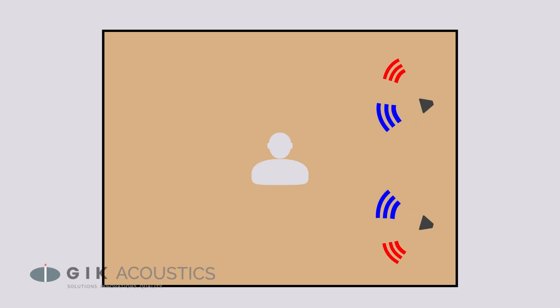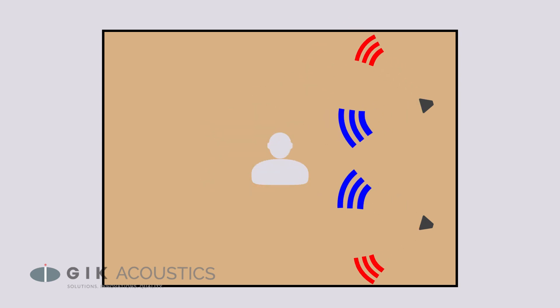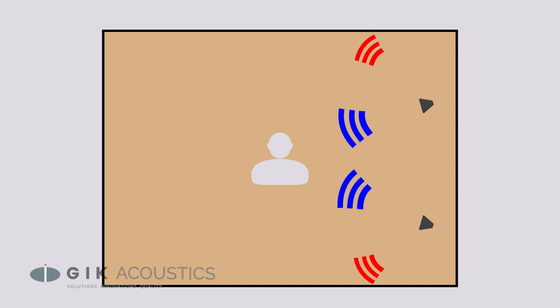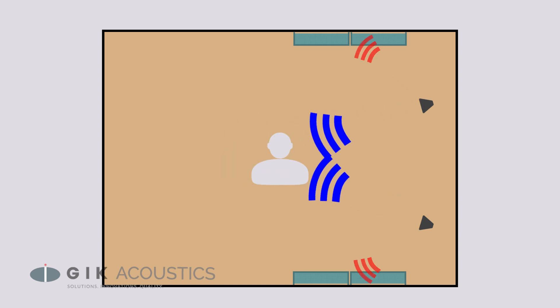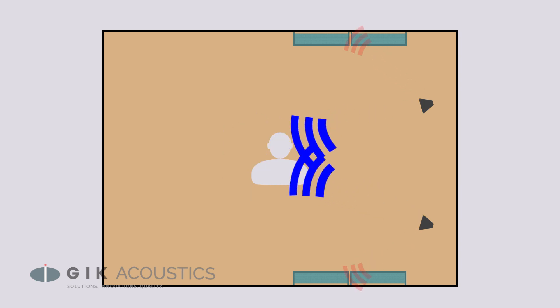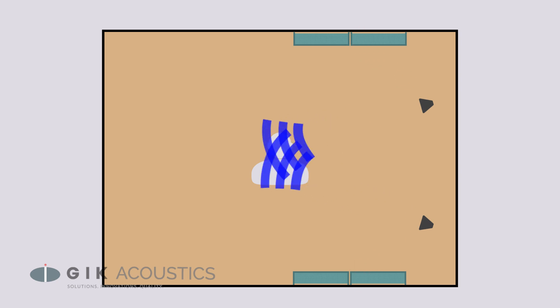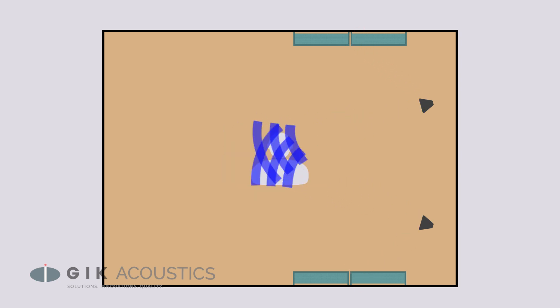First off, it's impossible to correct for the interference from your early reflections using a DSP. When we treat first reflections, our goal is to lower the energy of the reflected sound in relationship to the direct sound. If you lower the signal from the speakers, both the direct sound and the reflected sound will be lowered in intensity at the exact same rate, so the reflected sound will still smear the audio image in the exact same way. By adding absorption to your early reflection points, you take energy away from the reflections without lowering the audio traveling directly to the listening position.